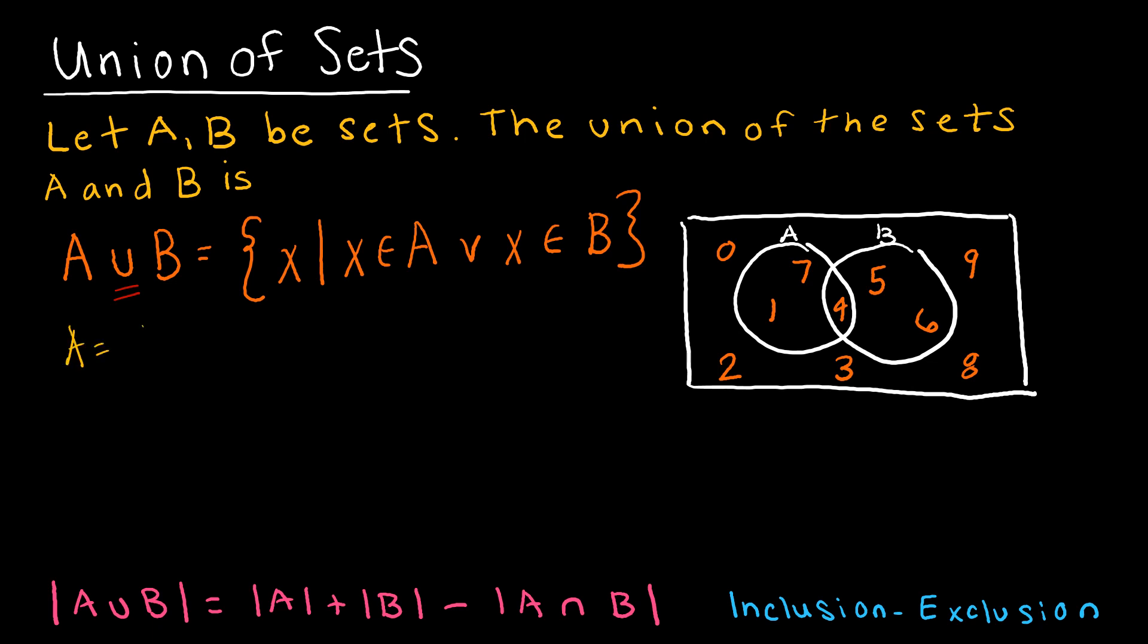we can see that set A is the set that includes the elements 1, 4, and 7. And set B, because that was everything contained in the set A circle, 1, 4, 7. And in set B, it contains the elements 4, 5, and 6.